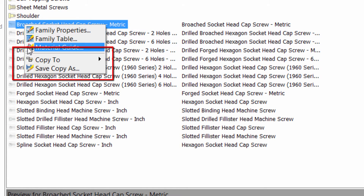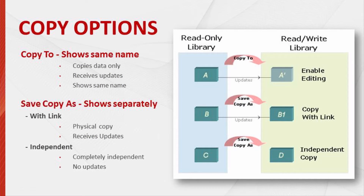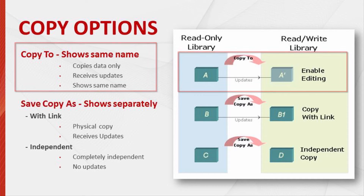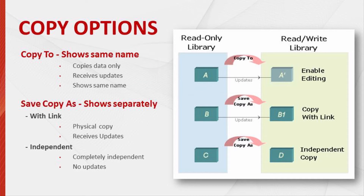This is where we'll find our copy options. We'll utilize these so that we can copy our own families and customize them. You'll notice that we have two copy options: copy to and save copy as. The copy to option will always show the same family name regardless. So even if we make a copy of the brooch socket head cap screw metric, that name will always stay the same. It will also receive updates when you migrate to a newer release of Inventor and stays connected to the original library, so that original library always has to be present.